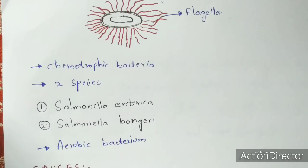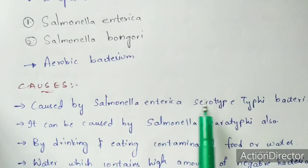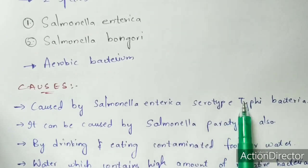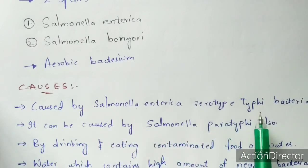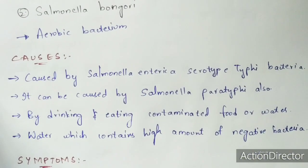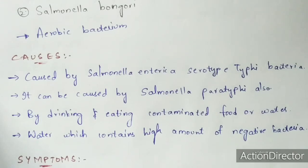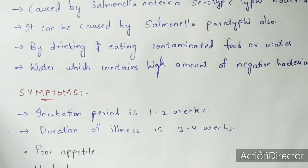Typhoid fever is caused by Salmonella enterica serotype Typhi and also by Salmonella paratyphi. It is transmitted by drinking and eating contaminated food and water containing these gram-negative bacteria. All species of Salmonella involved cause the same disease, called typhoid fever.